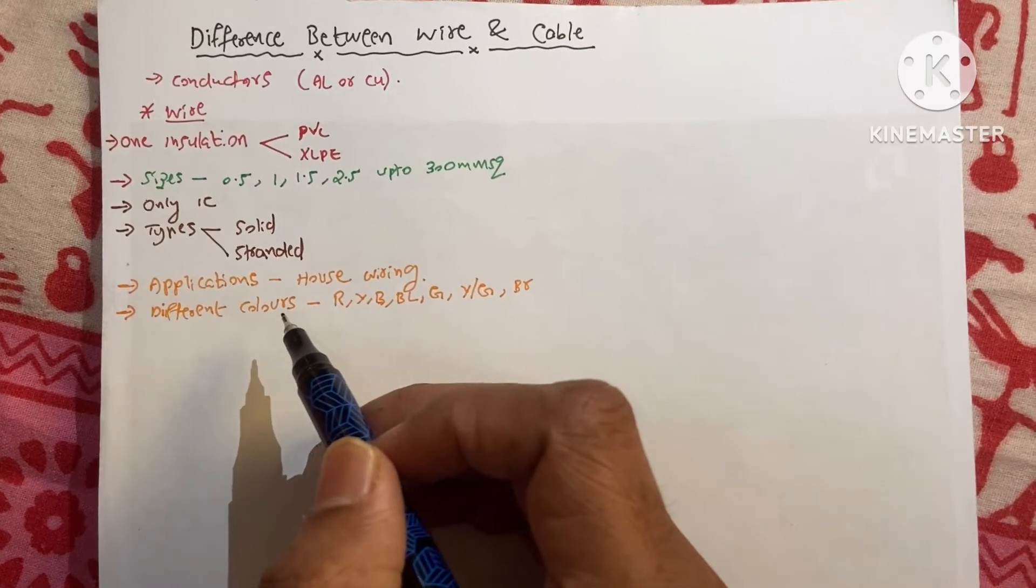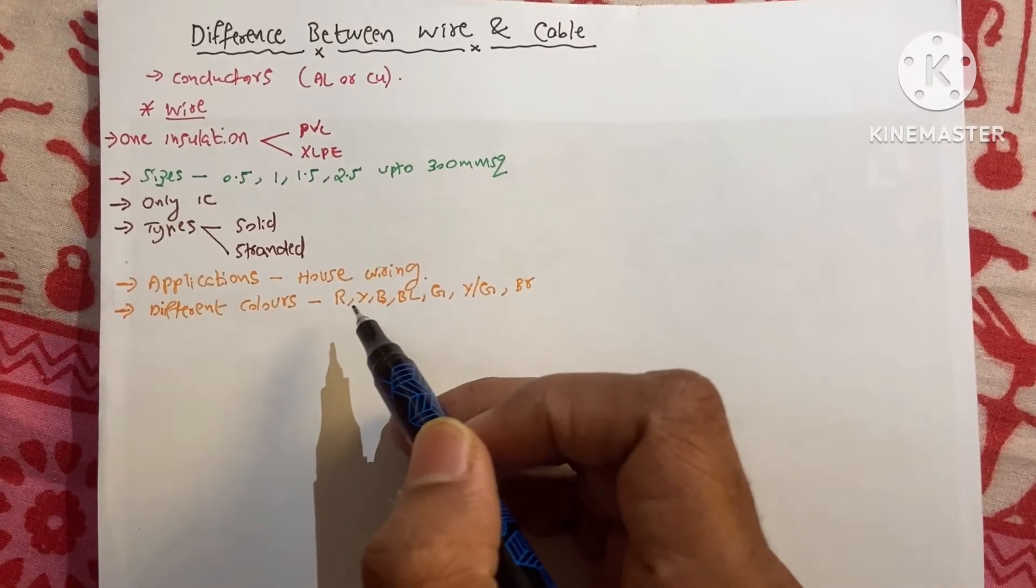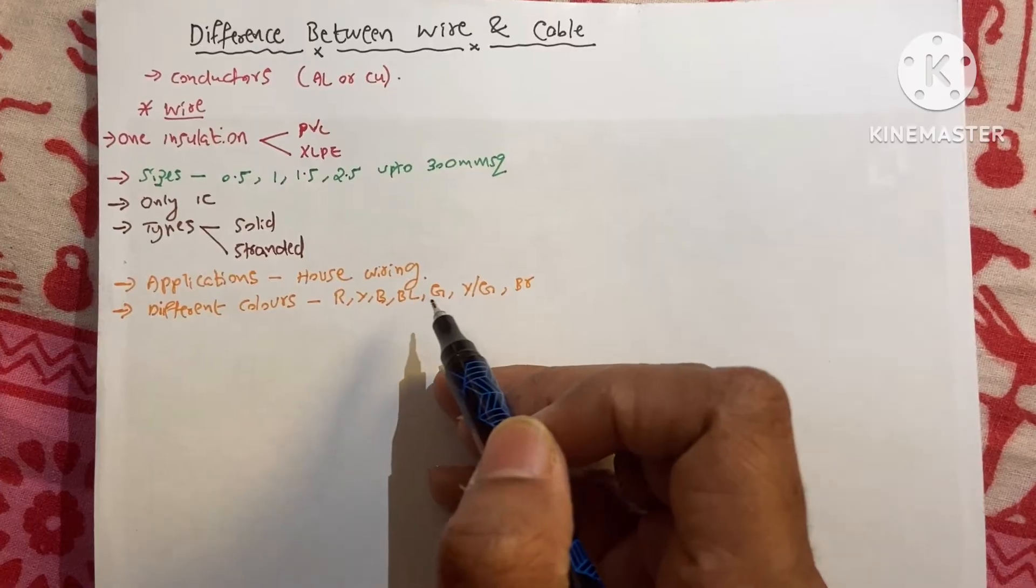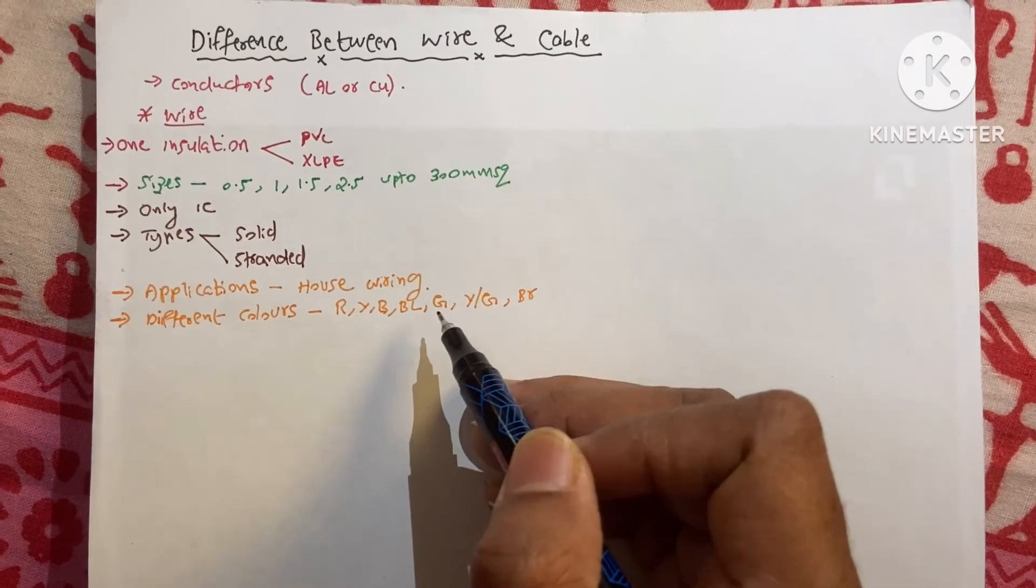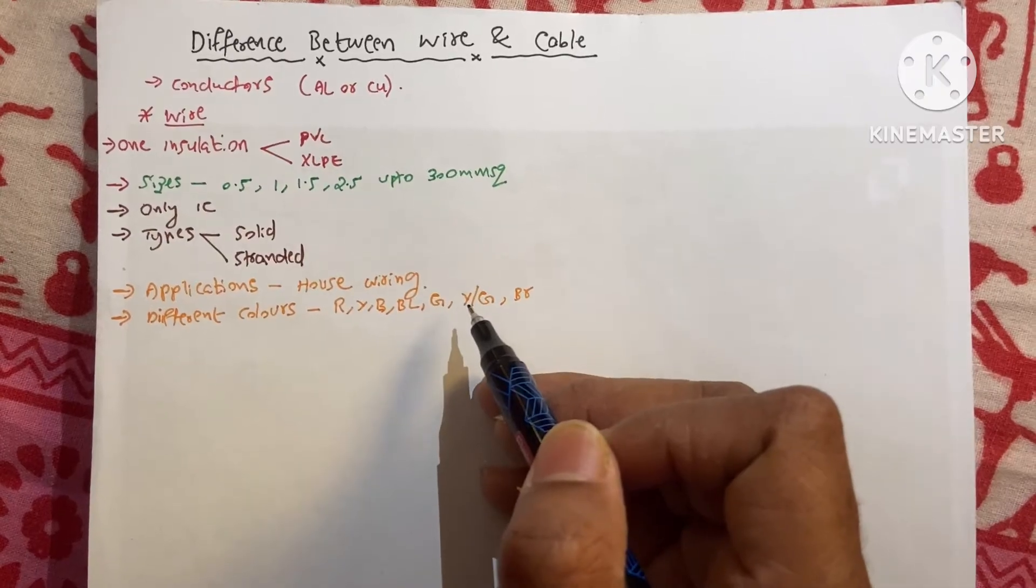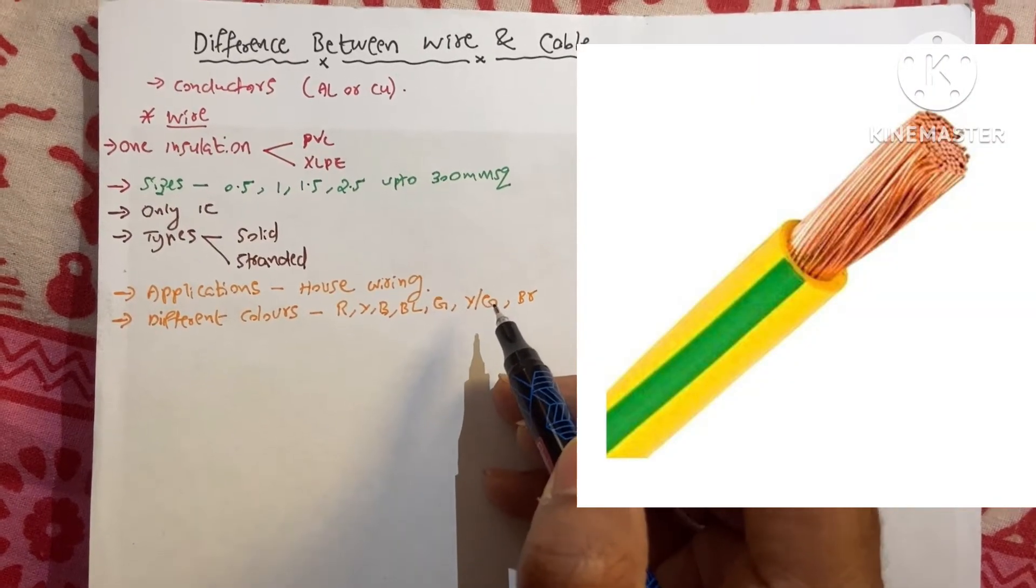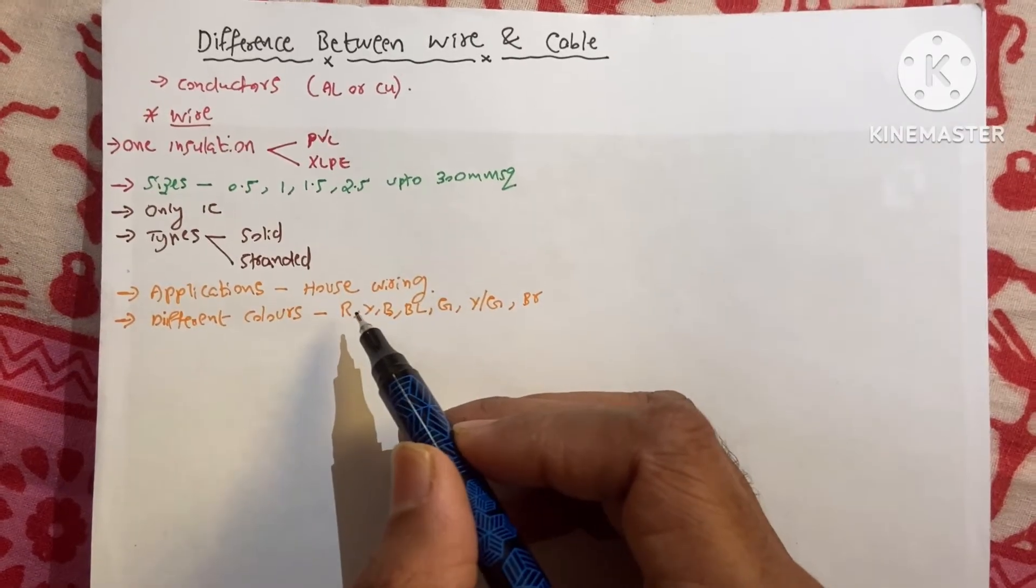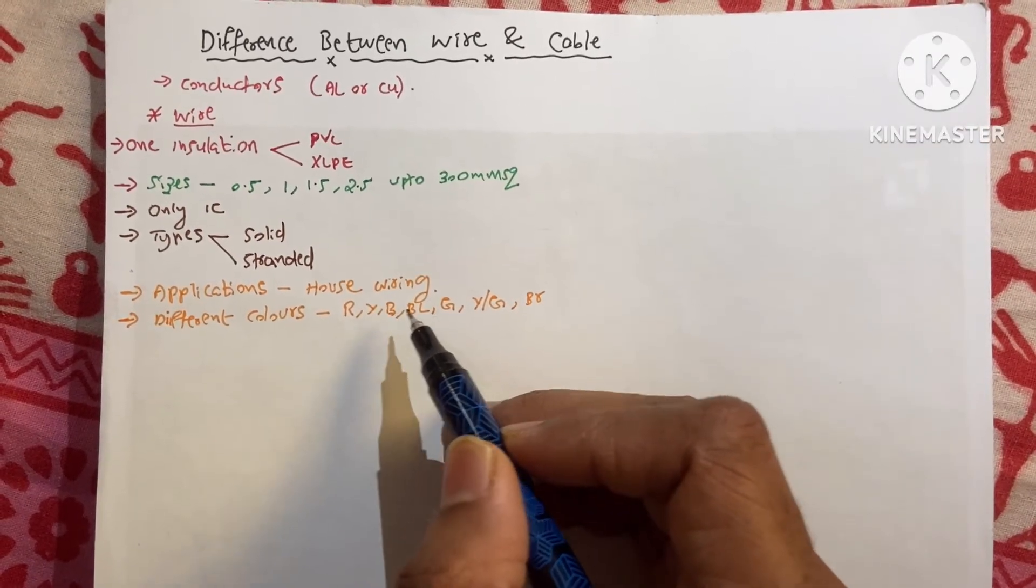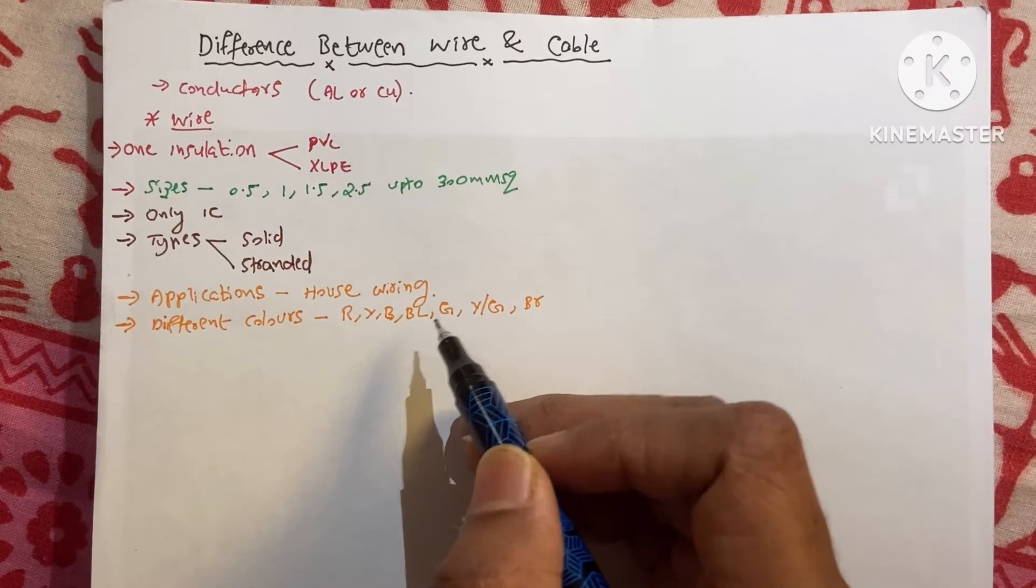And the different colors of these wires are available. Red, yellow, blue, black, green, yellow green, brown, like that. We use the green and yellow green color code for earthing. The remaining we use for the different purposes. For example, R, Y, B for the phases, black for neutral like that.